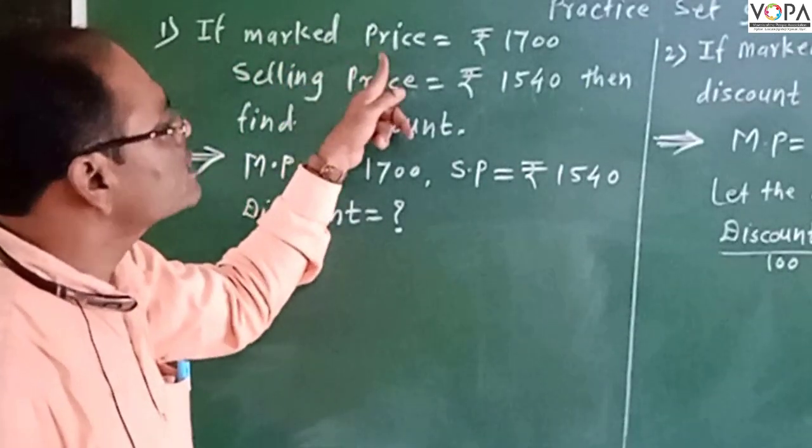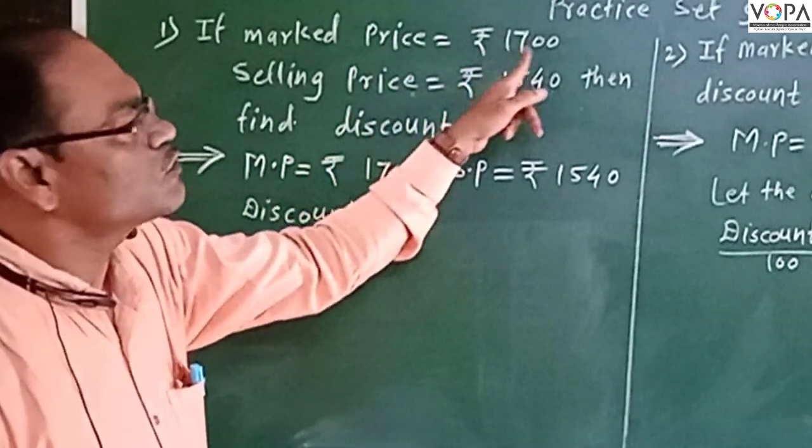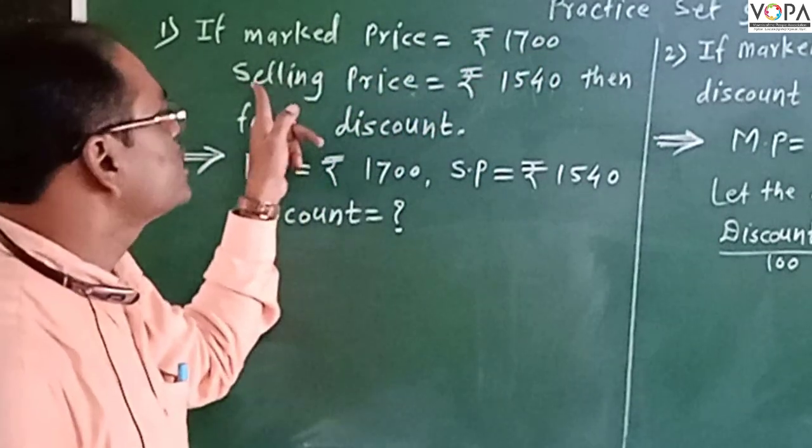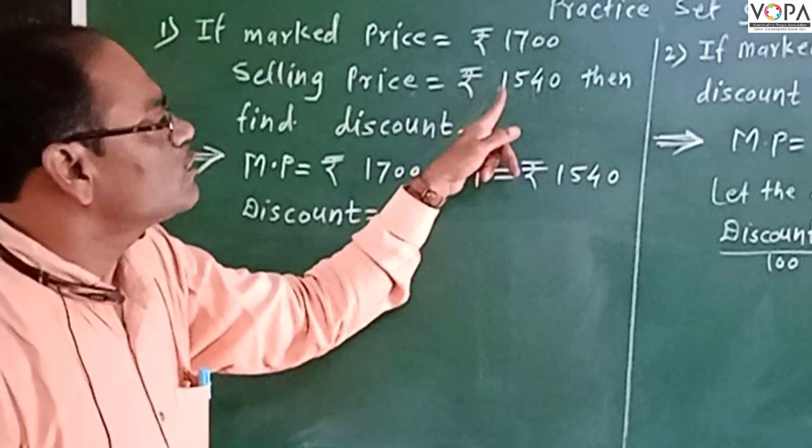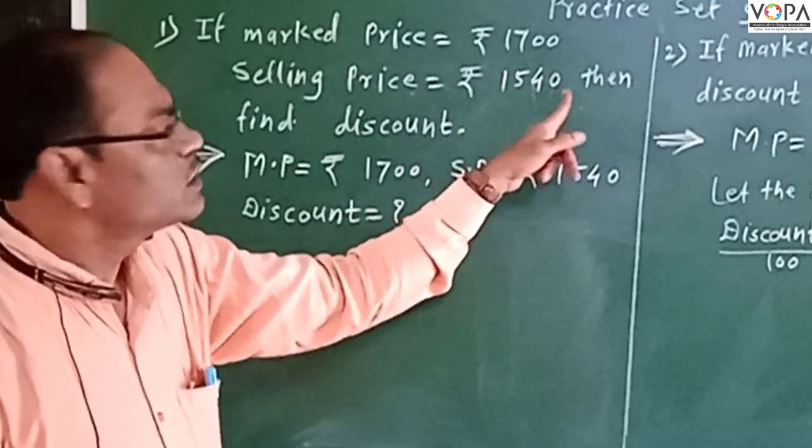If marked price equals to ₹1700, selling price equals to ₹1540, then we have to find the discount.